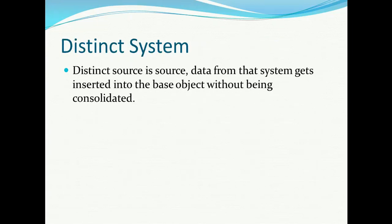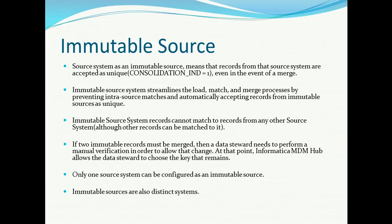Distinct source: a distinct source is a source where data from that source gets inserted into the base object without being consolidated. These are the two things — one is immutable source and the second is distinct source — and these properties are configured at the merge setting level. The immutable source system streamlines the load, match, and merge process by preventing intra-source matches and automatically accepting records from the immutable source as unique.